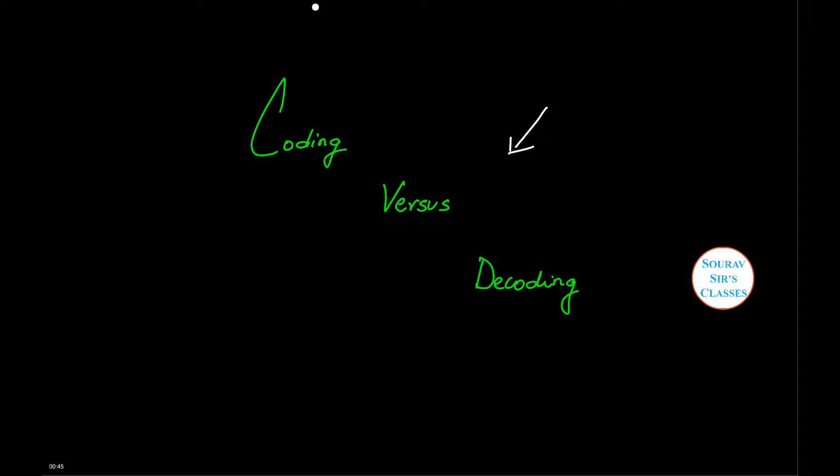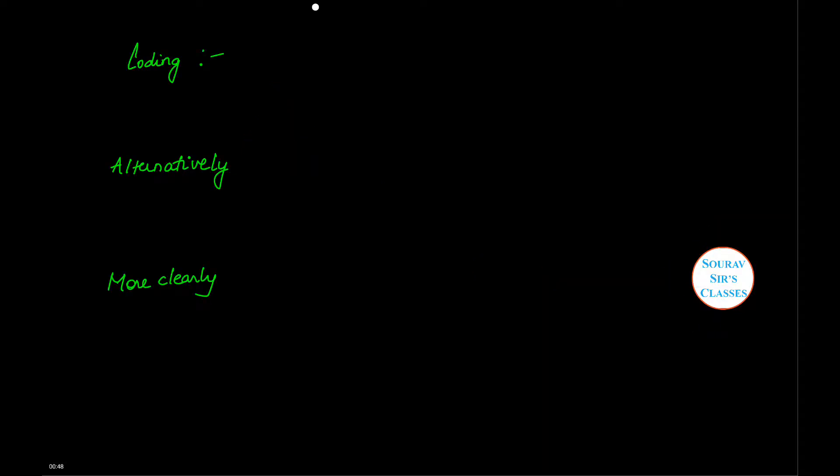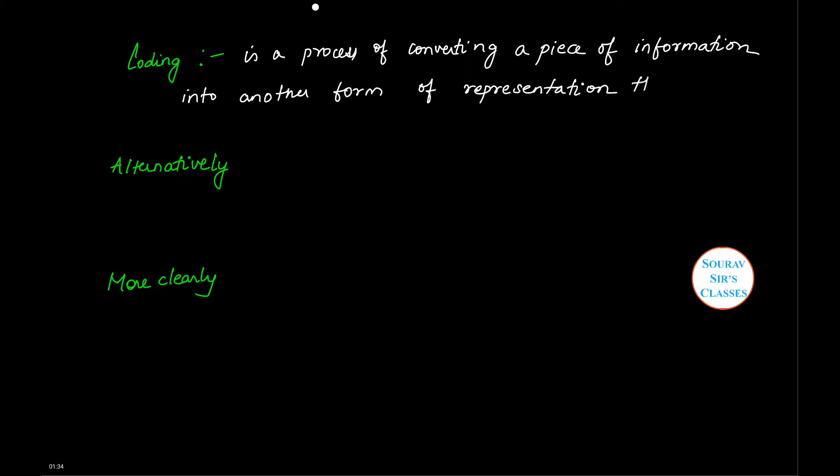Here we will learn the basic notion between coding and decoding. First, we will start with coding. Coding is a process of converting a piece of information into another form of representation through signals.